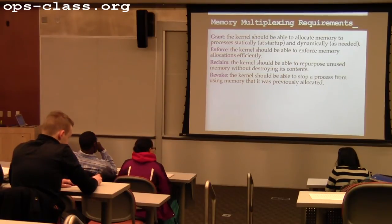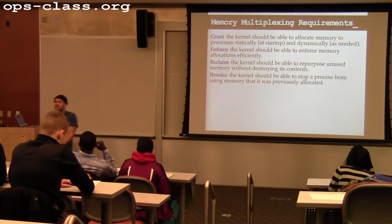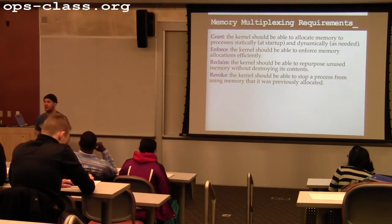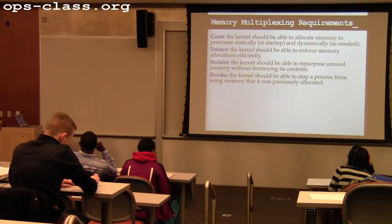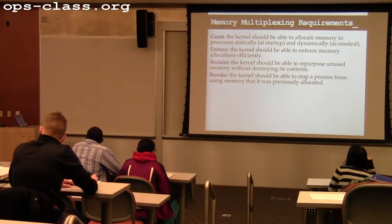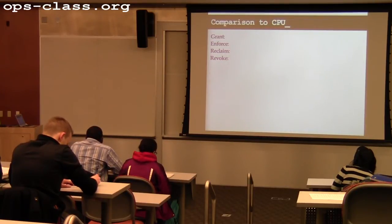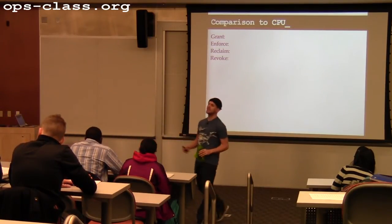If the kernel can identify memory that's not being used, I'd like to transparently reclaim it from the process without destroying the contents. If I destroy the contents, I've broken the expectations processes have about memory — processes don't expect that data written into memory and not used for a while just disappears. I should be able to repurpose the memory without destroying its contents. And finally, I need to be able to revoke allocations — there are various times when I want to say: I've allowed you to use that piece of memory for a certain period of time, and that time is over.